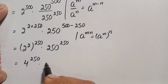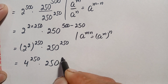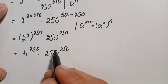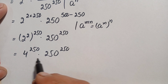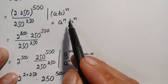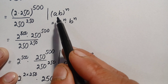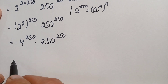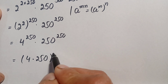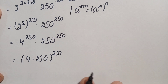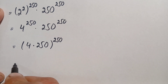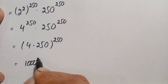Since 2 raised to power 2 is simply 4, this becomes 4 raised to power 250 times 250 raised to power 250. These two numbers have the same power, so we use the same-power identity and multiply the bases: 4 times 250 equals 1000, giving us 1000 raised to power 250.